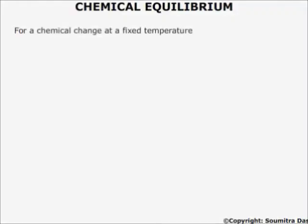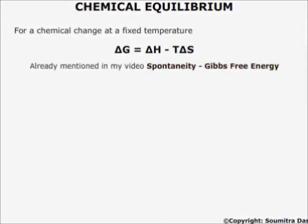For a chemical change at a fixed temperature, ΔG is equal to ΔH minus TΔS. You have come through this formula in my video on Spontaneity and Gibbs free energy.